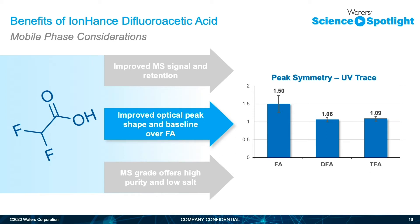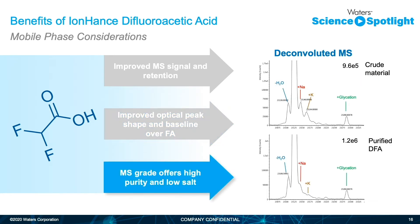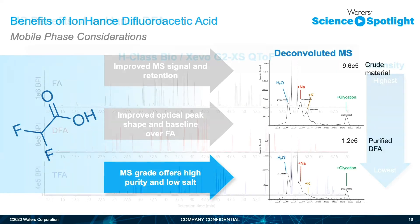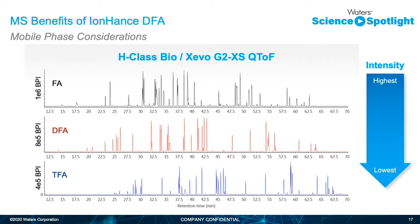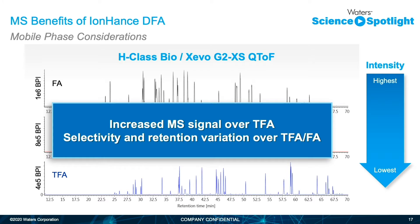But for optics, DFA — difluoroacetic acid — has a much better peak shape and baseline than formic acid. The high purity of I-enhanced DFA removes impurities and extraneous peaks from your chromatography. In this example of high resolution MS, the improvements of retention over formic acid and increased peak area over trifluoroacetic acid are clear simply by switching to difluoroacetic acid. It may not offer the same level of intensity as formic acid for MS applications, but the change in selectivity can be key for troublesome separations.